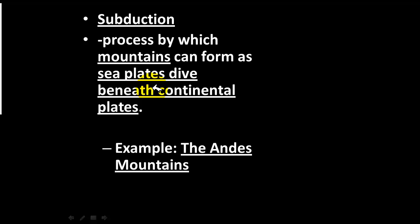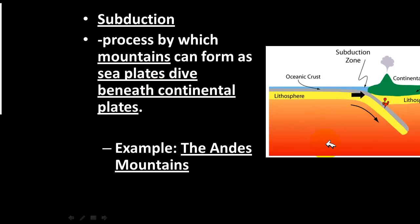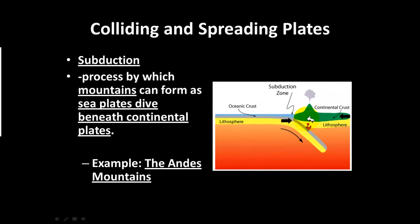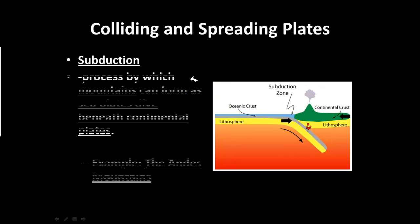One key term is subduction — the process of how mountains form. Looking at this graphic, it shows how mountains form as the plates that make up the ocean slide under the plates that make up the continents. This process of subduction is believed to have created mountains — a good example is the Andes Mountains. The key point is that subduction is the process where plates slide underneath one another and mountains are formed.